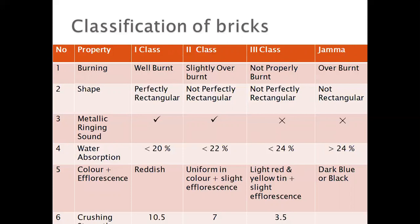For second class bricks there will be slight efflorescence — you can see white or gray patches here and there. Crushing strength is 7 Newton per mm². Third class bricks are not properly burnt, the shape is not perfectly rectangular, and if you tap two bricks together you can't hear a metallic ringing sound. Water absorption is less than 24%, color is light red with a yellow tinge. Crushing strength is 3.5 Newton per mm². Jamma or overburnt bricks have an uneven shape, no metallic ringing sound, water absorption greater than 24%, color is dark blue or black, and the crushing strength is very low.